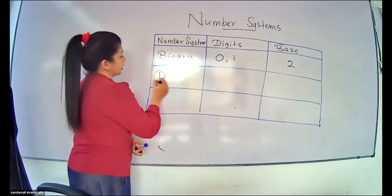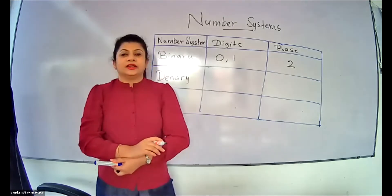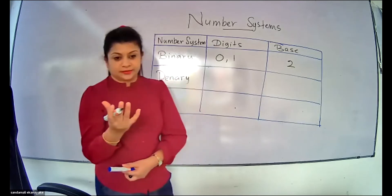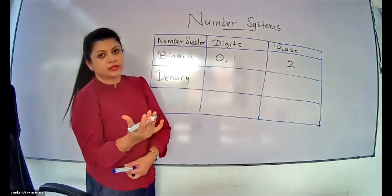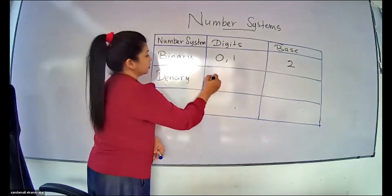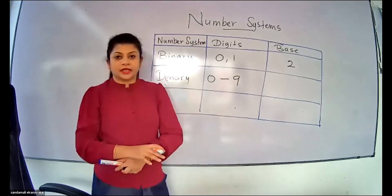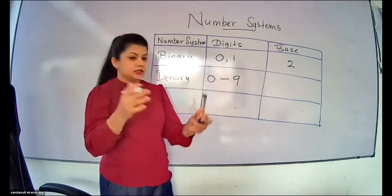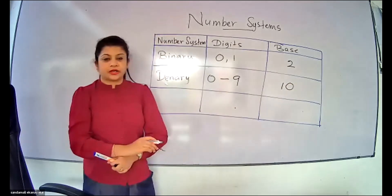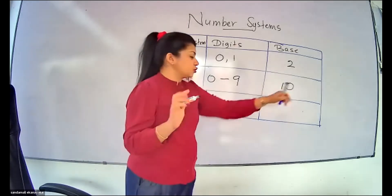The next number system you need to learn is the denary number system. If you take the denary number system, of course you are already familiar with it. How many digits do we have? Ten digits, starting from zero to nine. So the base is going to be ten because you are going to have zero to nine — ten digits. That's the reason the base is going to be ten.